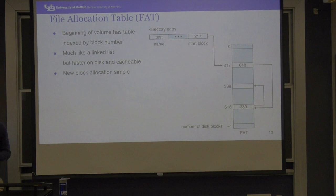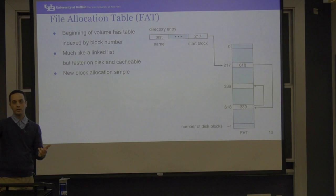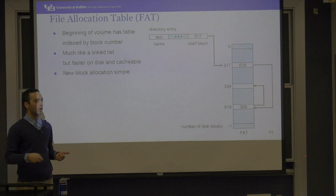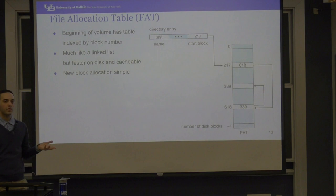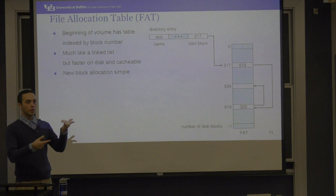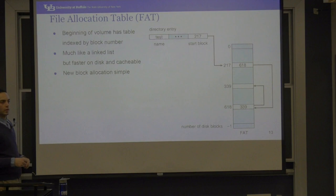The good thing about FAT is that all of this happens in one location, so even on a hard drive the seek time is quick because you don't jump all over the place. Also, because it uses this allocation table specifically for this purpose and it's much smaller than the file itself, the OS can cache it in memory. It also makes allocation of new blocks very simple — you look for blocks with a zero entry, allocate one, point it to the new block, and you've grown your file.